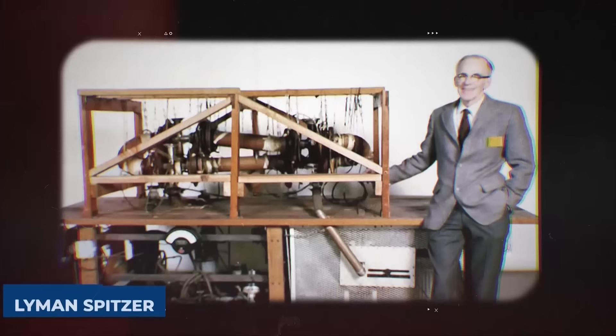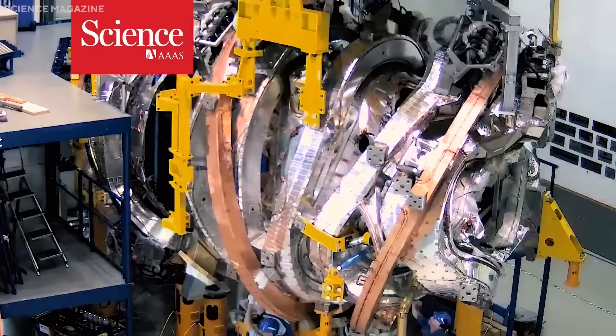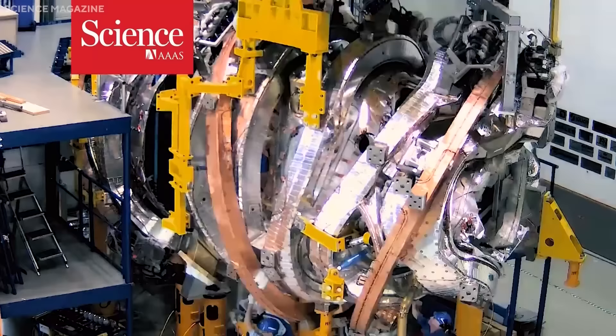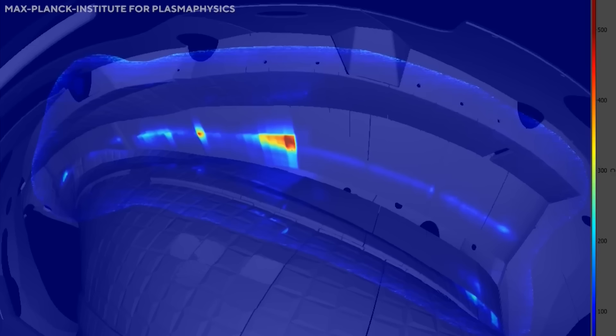The stellarator was invented by scientist Lyman Spitzer in 1951 and was the first fusion device to demonstrate plasma confinement. However, the stellarator faced many technical challenges, such as the complex and precise shape of the magnetic coils, the high heat and particle losses, and the difficulty of maintaining plasma equilibrium and stability.